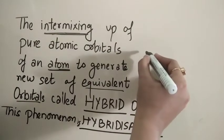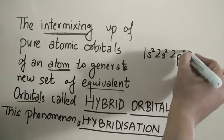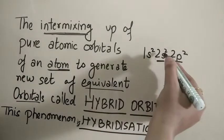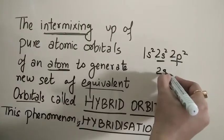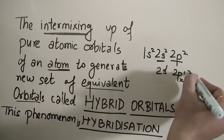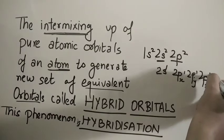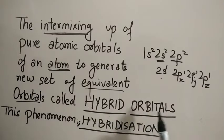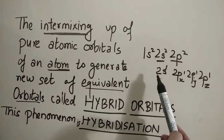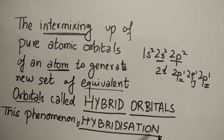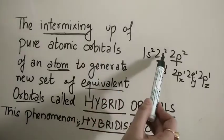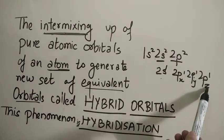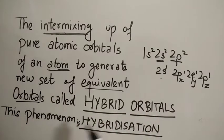For example, in the case of carbon, the electronic configuration is 1s2, 2s2, 2p2. These two are of equivalent energy because both have the same principal quantum number. An electron from the s orbital jumps into the p orbital, forming 2s1, 2px1, 2py1, and 2pz1. After intermixing, 4 orbitals are generated — these 4 hybrid orbitals can involve in bond formation. This intermixing of pure atomic orbitals of equivalent energy to give a new set of orbitals called hybrid orbitals is known as hybridization.